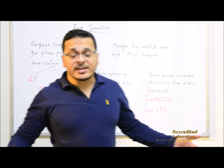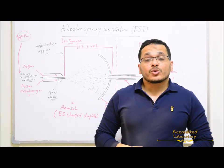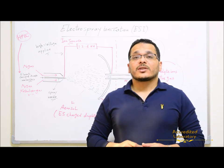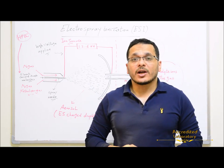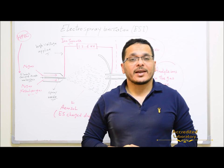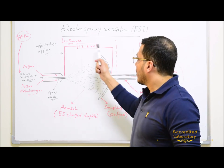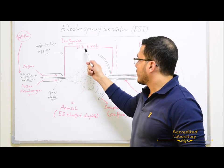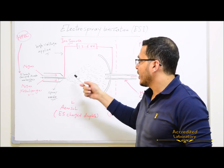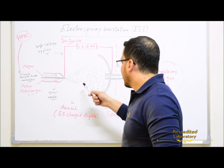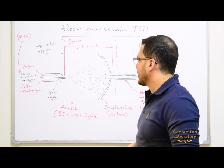Those based on sample desorption from solid substrates include matrix-assisted laser desorption ionization and laser desorption ionization. Electrospray ionization is a technique used in mass spectrometry to produce ions using an electrospray, in which a high voltage of 2 to 6 kilovolts is applied to a liquid to create an aerosol of electrospray-charged droplets.